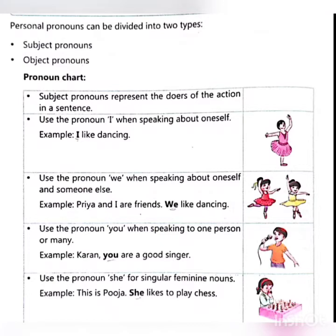The first one: use the pronoun 'I' when speaking about oneself. Example: I like dancing. Use the pronoun 'we' when speaking about oneself and someone else. Example: Priya and I are friends. We like dancing.